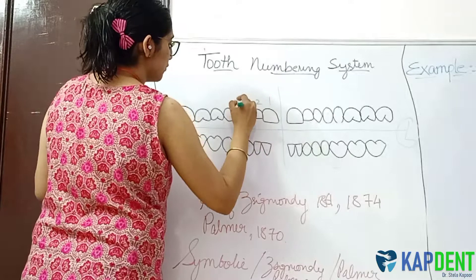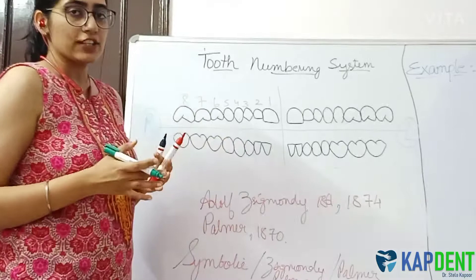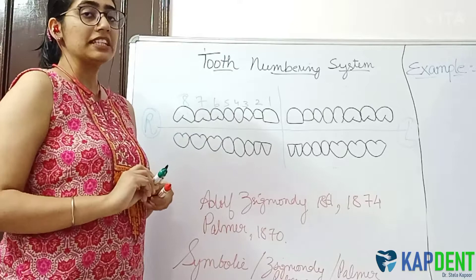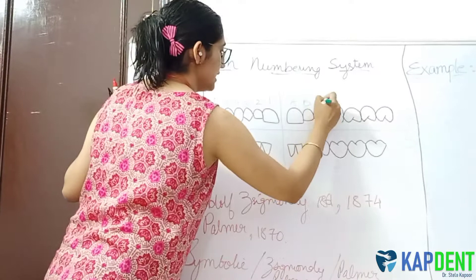We use numbers in the case of permanent dentition, while in the case of primary dentition, when we have only five teeth in each quadrant, alphabets are used — that is, A, B, C, D, and E.